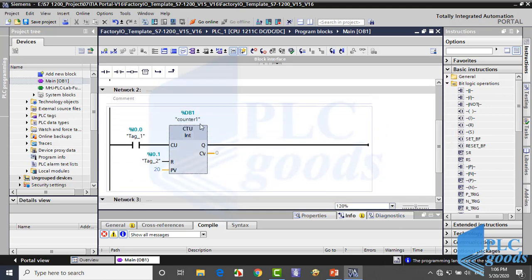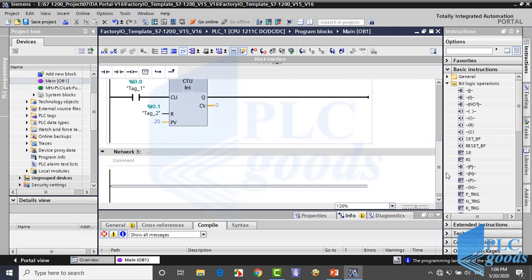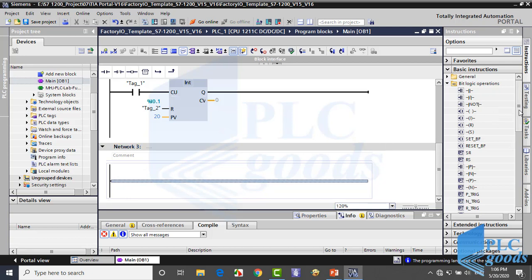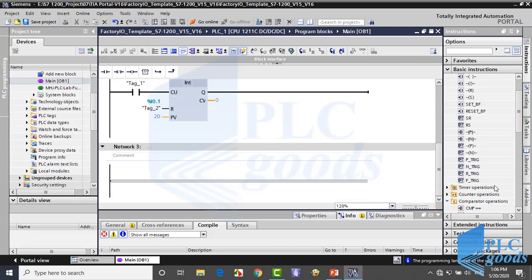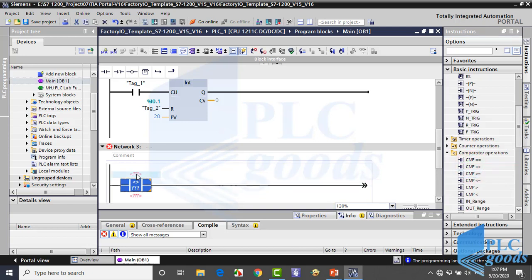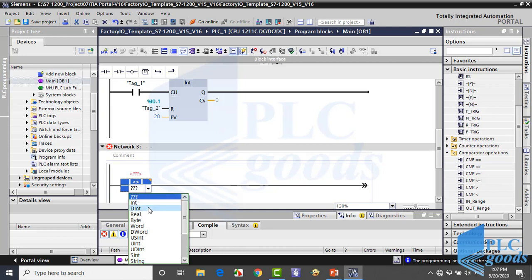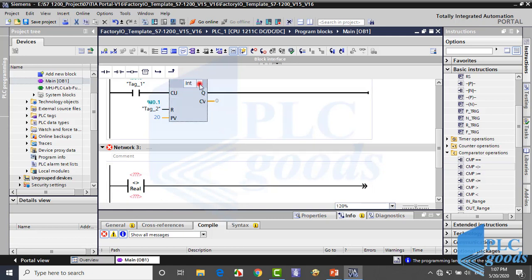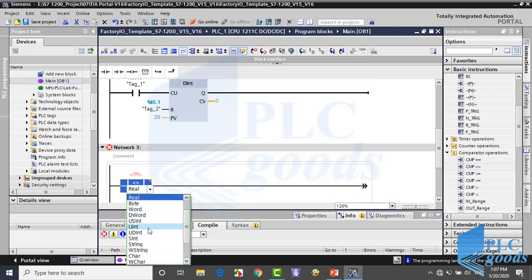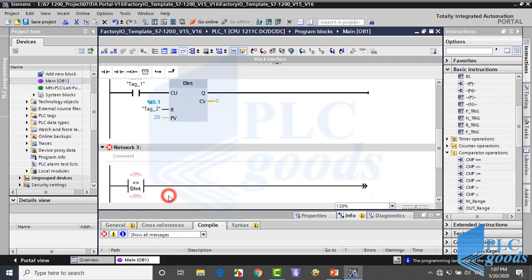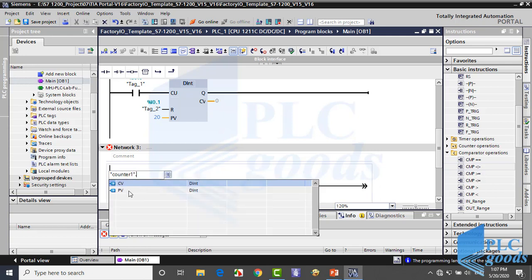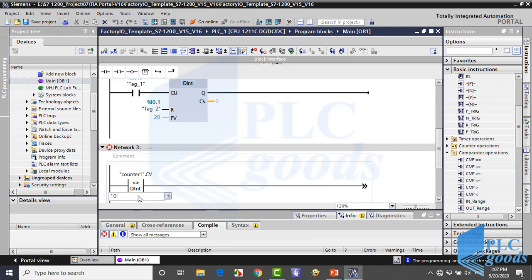Let's test some comparators. Here I've inserted an up count counter. On the right side, click on comparator operations. I'm going to insert an inequality instruction. First I must determine which type of data are going to be compared. Let me select double integer for my counter and also comparator. Here I refer to current value of the counter, and here I write 10.